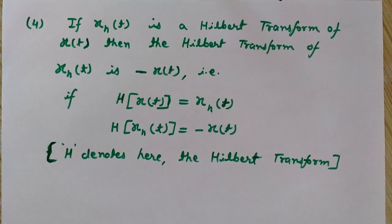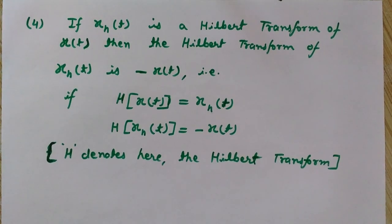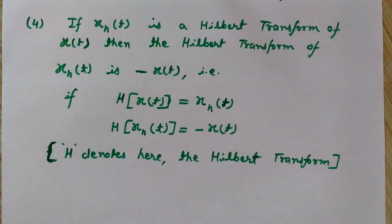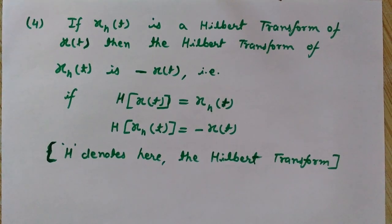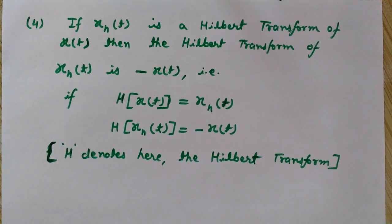There are many applications of Hilbert Transform. It is used to realize phase selectivity in the generation of single sideband (SSB) modulation, where only one sideband is present. Another application is that it provides the mathematical basis for the representation of bandpass signals. One important thing to note is that the Hilbert Transform applies to any signal that is Fourier transformable. So this covers the basics, applications, and properties of Hilbert Transform.